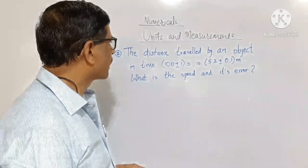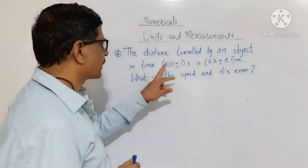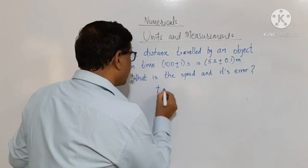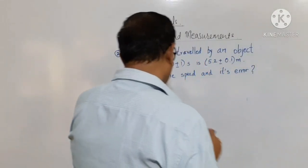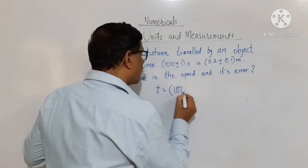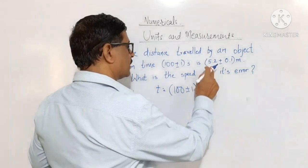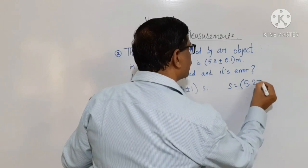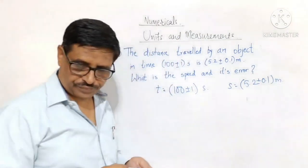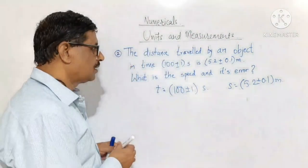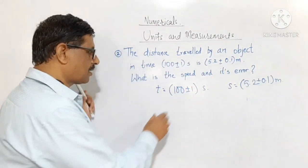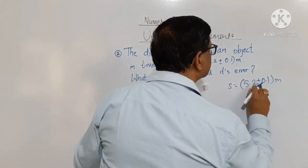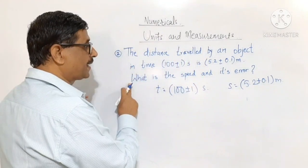The next numerical: the distance traveled by an object in time 100 plus or minus 1 second. At the same time the distance is given as 5.2 plus or minus 0.1 meter. The real values expected here are 100 and 5.2, and these are the possible errors in them. What is the speed and its error?